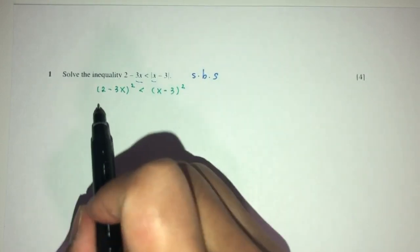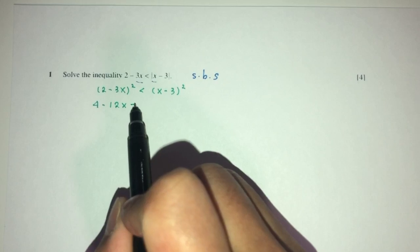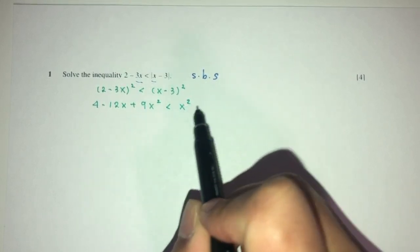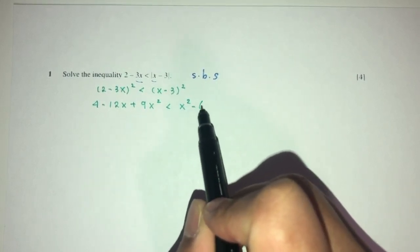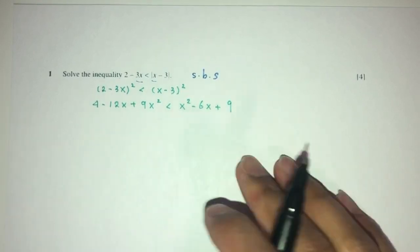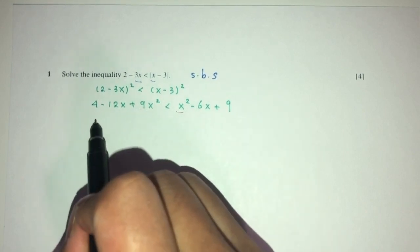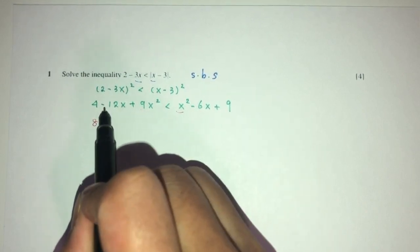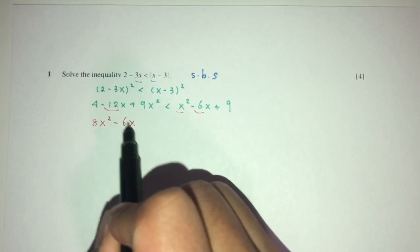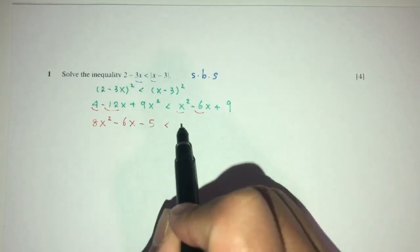Now, we can expand. You will have 4 minus 12x plus 9x squared less than x squared minus 6x plus 9. Now, simplify. Bring everything to one side: you will have 9 minus 1, that should be 8x squared, minus 12 plus 6, that should be minus 6x, and 4 minus 9, minus 5, less than 0.